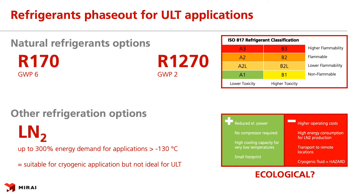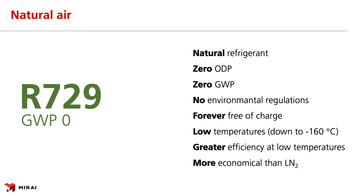This brings us to the point where Mirai sees the future of ULT refrigeration — it is with natural air as refrigerant. It is by definition natural and a refrigerant that comes with no ODP or GWP. Since air is all around us, there is nobody or nothing regulating air. Air will be forever free of charge, and air has greater efficiency in the ULT range than other solutions used.